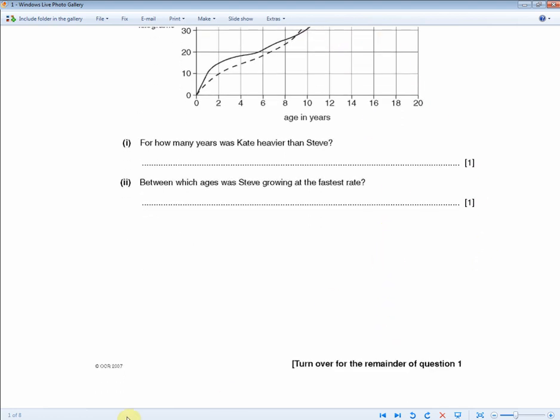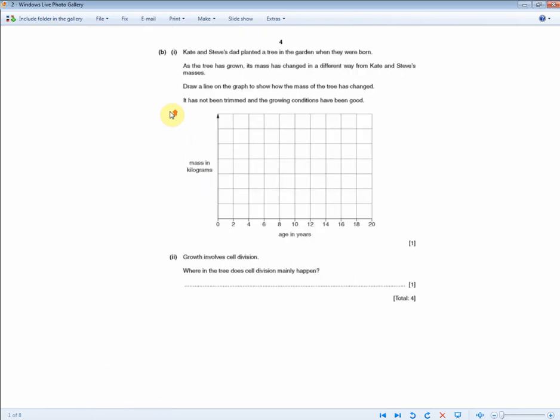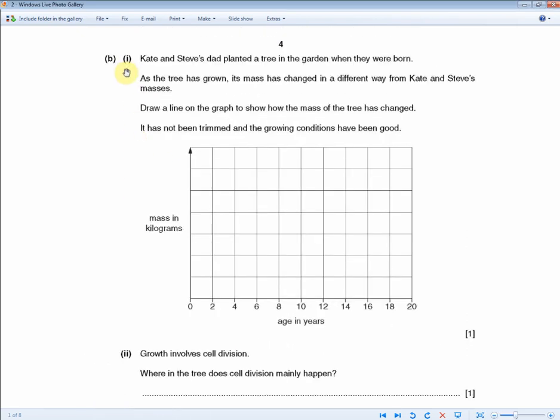So the next question, which is a continuation of this question, reads, Kate and Steve's dad planted a tree in the garden when they were born. As the tree has grown, its mass has changed in a different way from Kate and Steve's masses. Draw a line on the graph to show how the mass of the tree has changed. It has not been trimmed, and the growing conditions have been good. Right, so for one mark, you gotta look for the key words. The growing conditions have been good, hasn't been trimmed. So basically, as it is, you know?